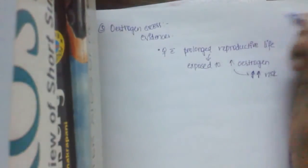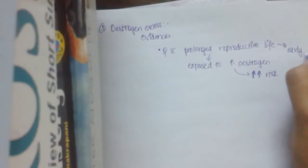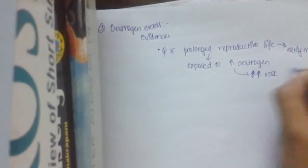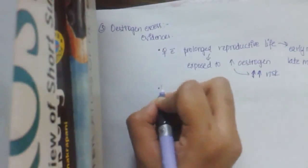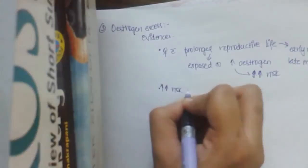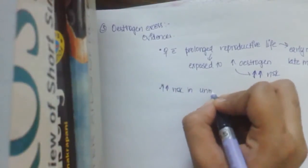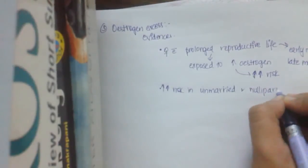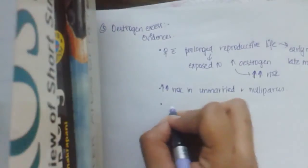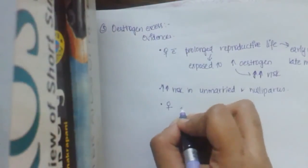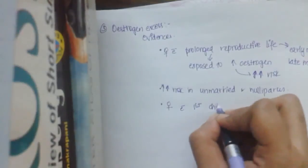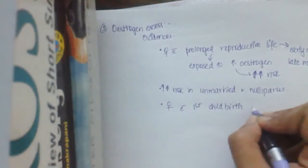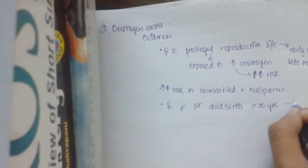So how does one have a prolonged reproductive life? It is by early menarche and late menopause. And increased risk in unmarried and nulliparous women.